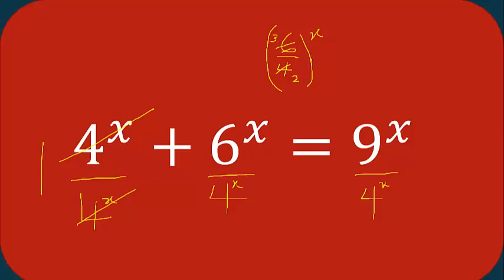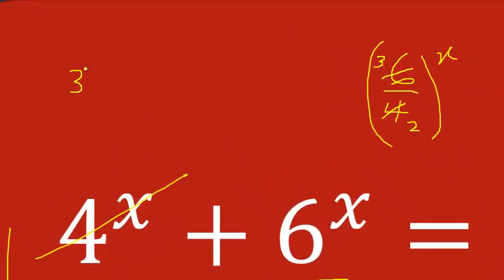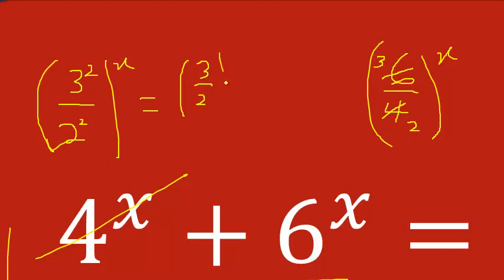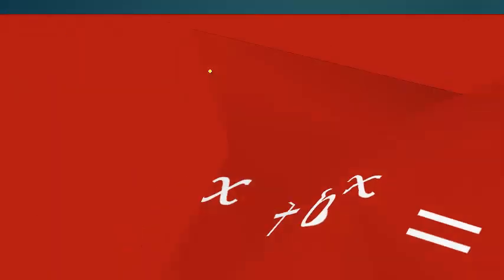Since we have (3/2) here, I will also write this one so that we have (9/4)^x. Now 9 is the same as 3 to the power 2, and 4 is the same as 2 to the power 2, to the power x. This is the same as (3/2), then these two powers multiply - this is 2x. This is power to power, so we multiply.